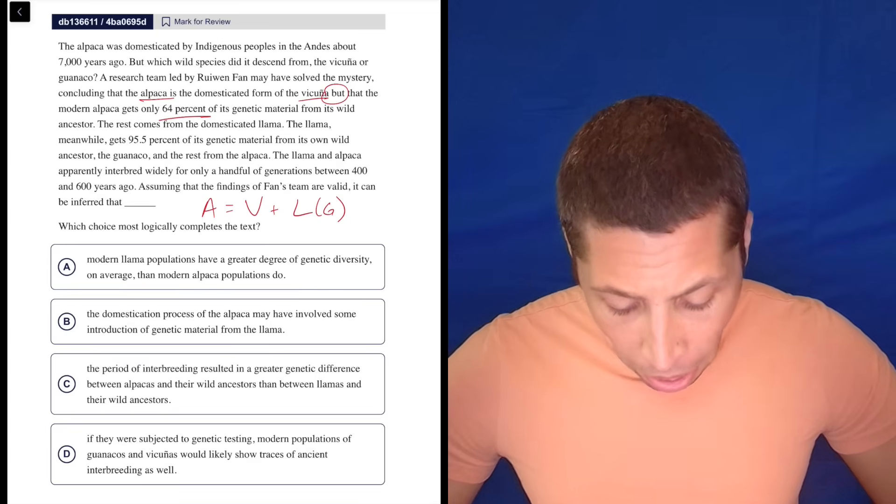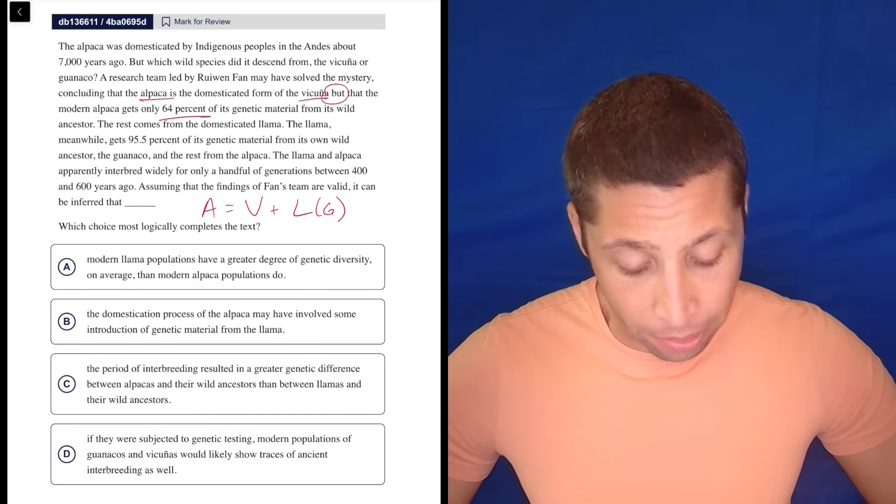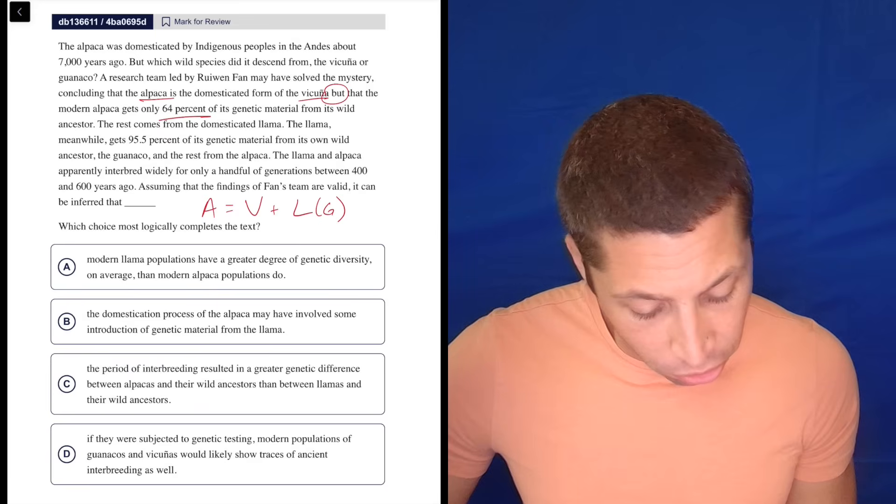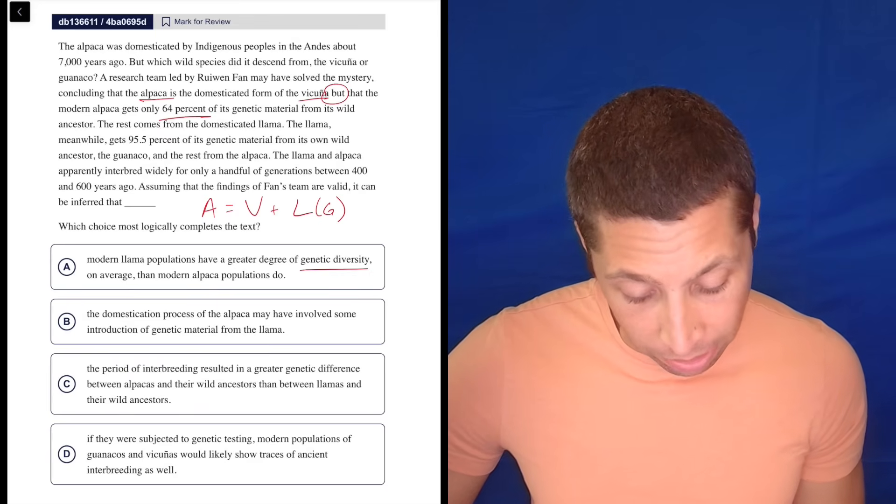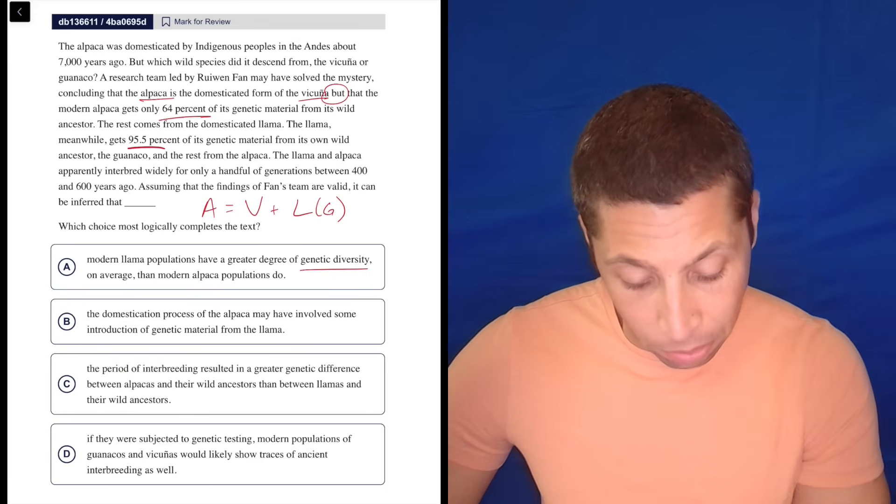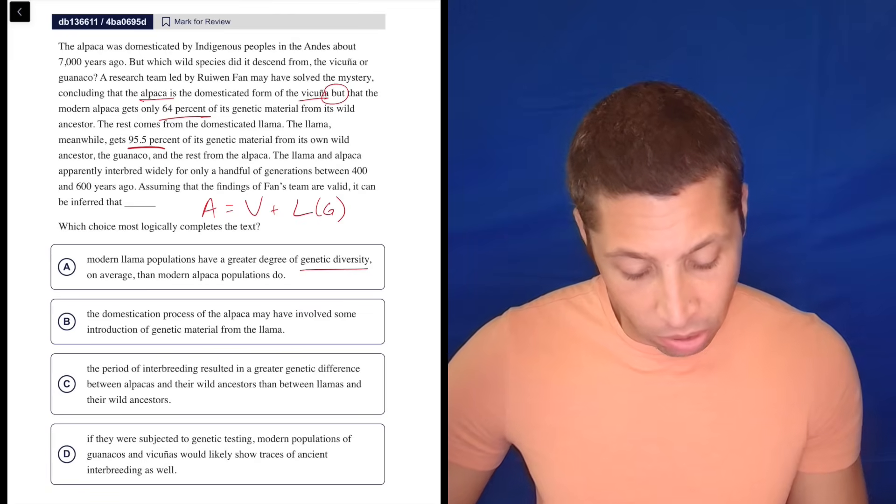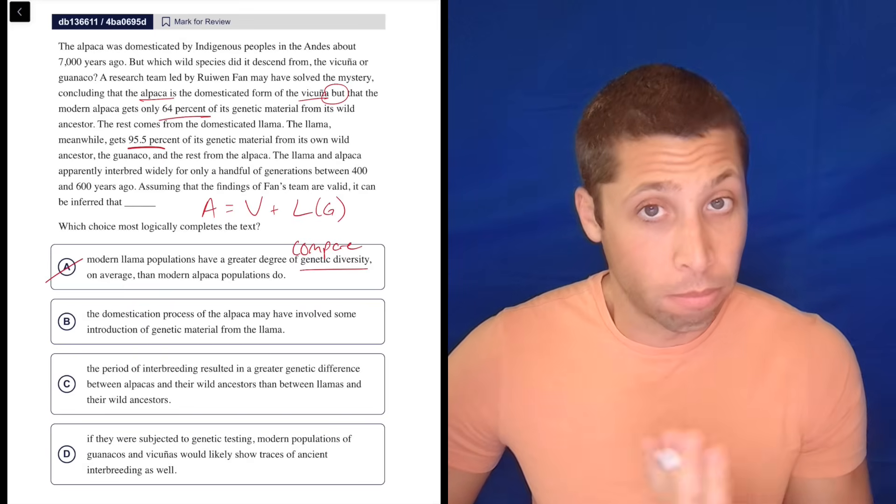A, modern llama populations have a greater degree of genetic diversity on average than modern alpaca populations do. I don't care about the genetic diversity. It also doesn't seem that way, right? Because the llama is 95.5% from the huenaco, whereas the alpaca is a mixture of things. So this just seems like a comparison that I don't care about. And then it's also just wrong.